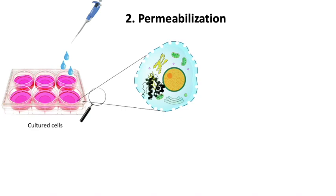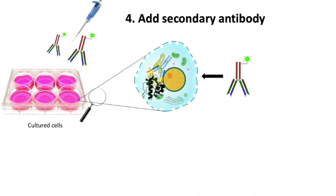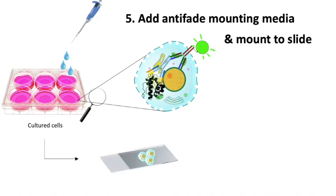After permeabilization we can add our primary antibody. The primary antibody will get inside the cell and will bind to the protein of interest. Next we add our secondary antibody, which will also enter the cell and bind the primary antibody. Finally, we take our treated cells from the plate and mount them onto a microscope slide to make them ready for imaging. We often add some anti-fading mounting media to the slide to preserve the fluorescent molecules of our sample and keep it for a longer time.